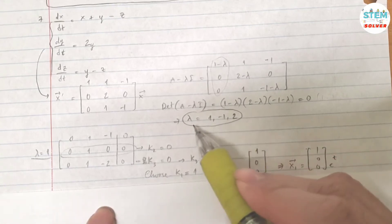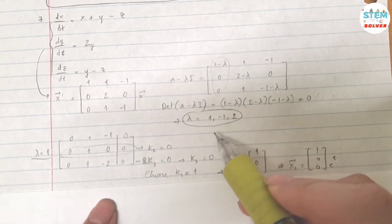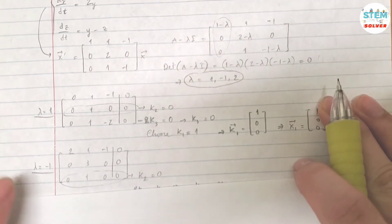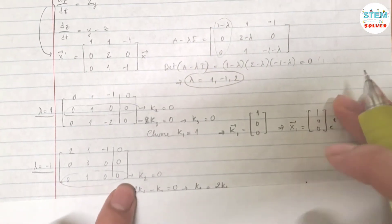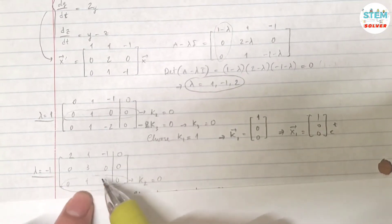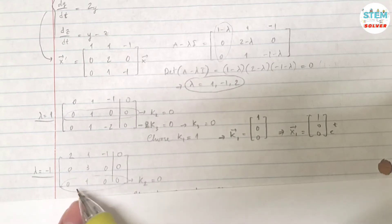Now you're going to do the same thing for lambda equals negative 1. Plug it into here, you will get a new matrix, which is this one, and then augmented with 0. Again, normally you would reduce it down to a reduced echelon matrix, but because our goal is to find what the unknowns are, you can see you have 0, 1, 0, 0, so that means that k2 equals 0. So very quickly, you can find k2 equals 0.